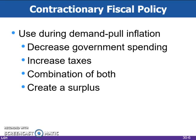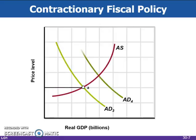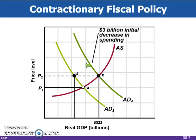When demand-pull inflation occurs, contractionary policy is the remedy. The problem with inflation is that aggregate demand is too high, so the government will decrease their spending and/or increase taxes to cause aggregate demand to fall. Contractionary fiscal policy uses decreases in government spending, increases in taxes, or a combination of both, to reduce demand-pull inflation. When the government uses contractionary fiscal policy, it will create a budget surplus.